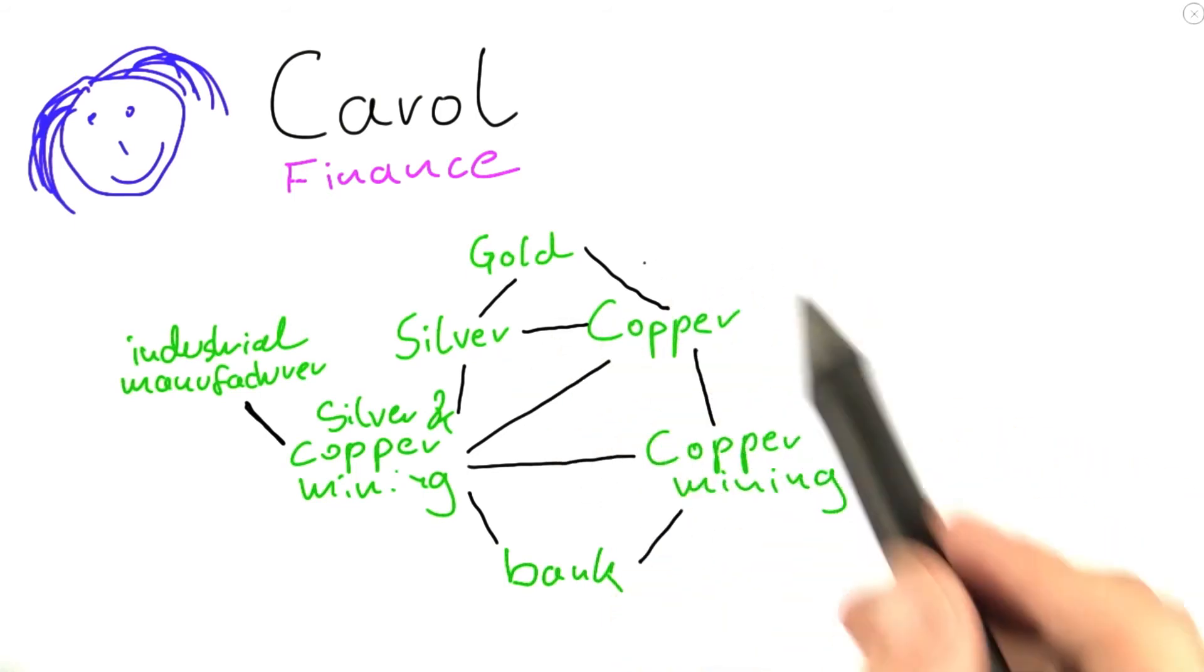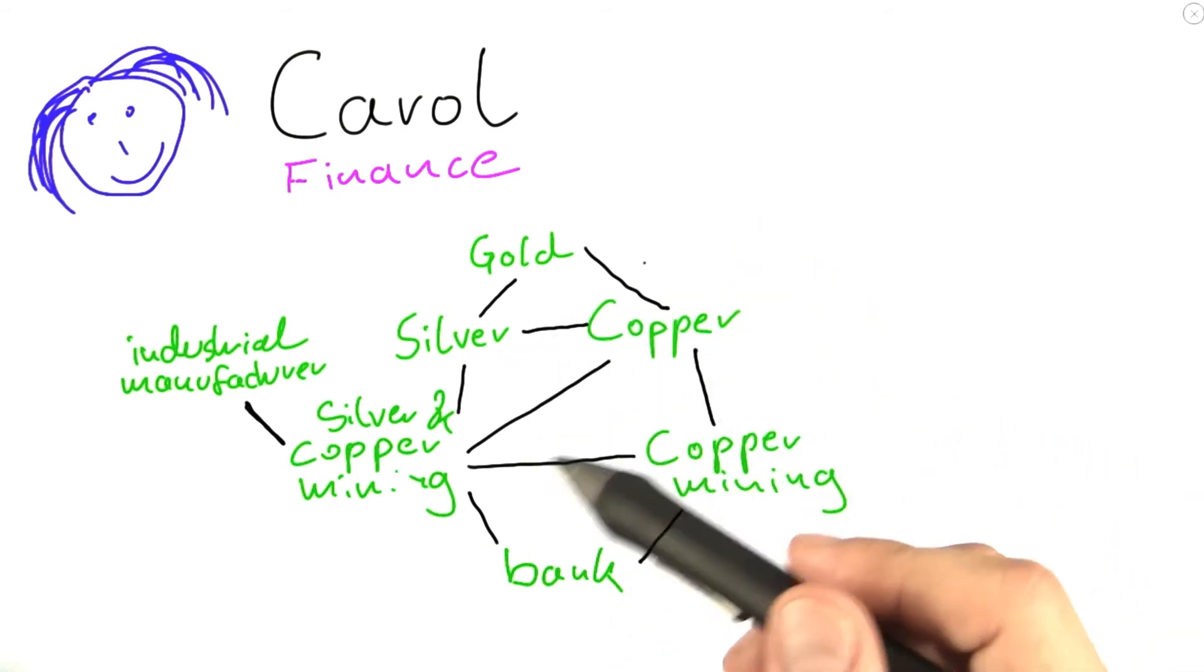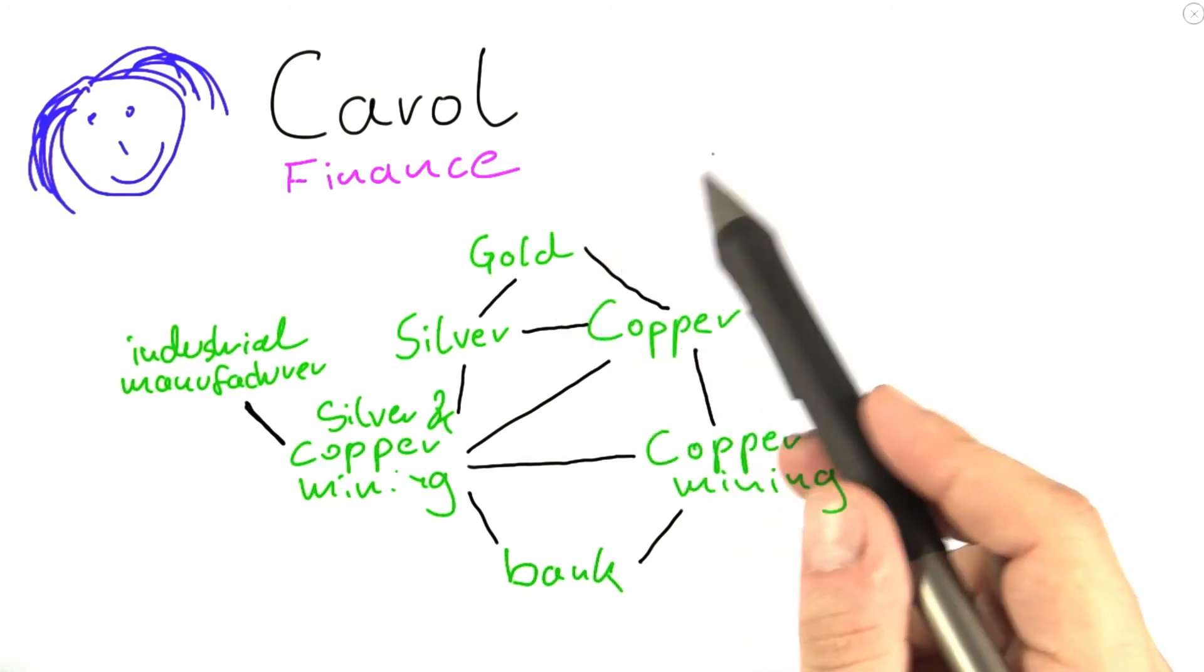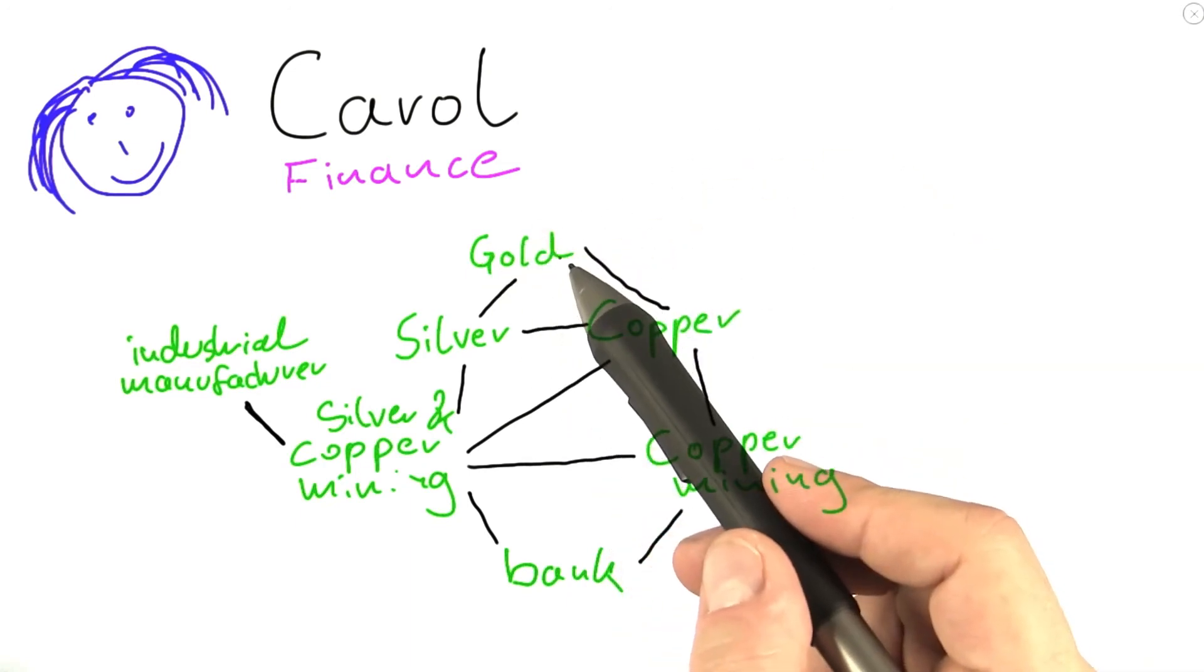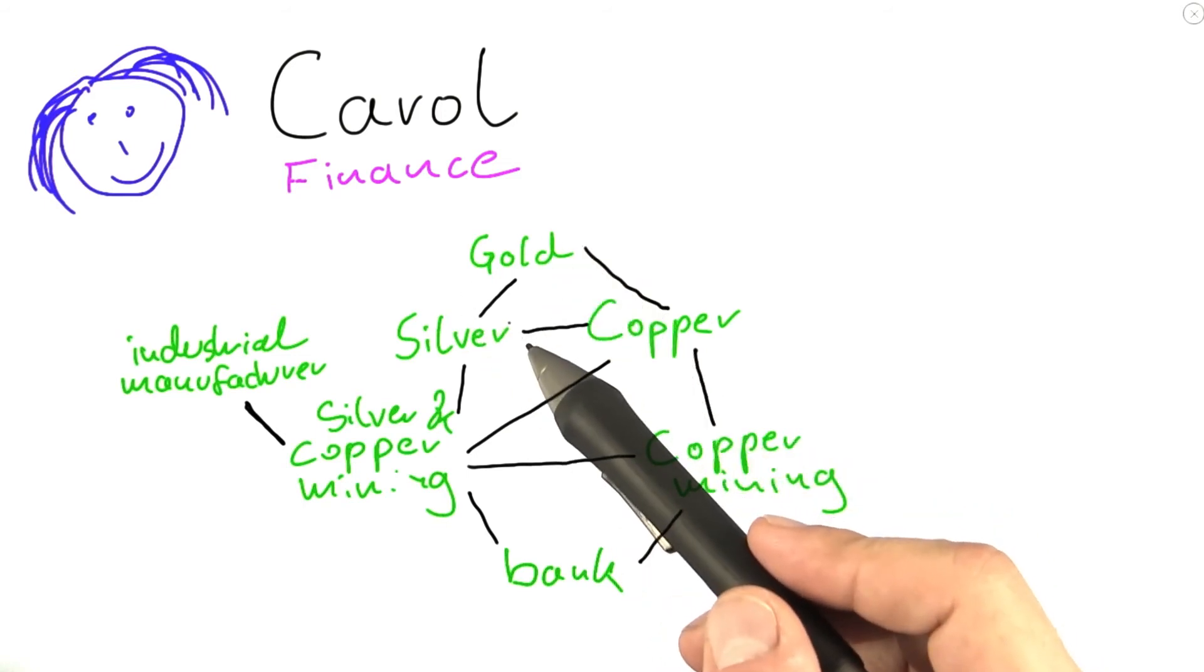So in a way, that is very similar to Bob's problem, because Bob, when he was looking at the genes, he was looking for genes where every gene is connected to every other gene. And now Carol is looking for possible investments that are not connected at all to each other.